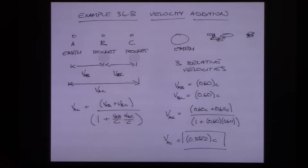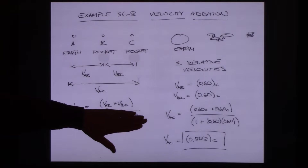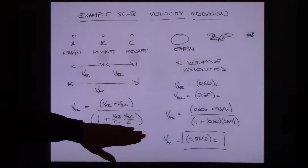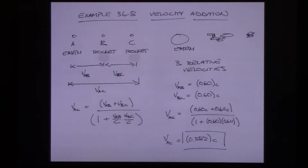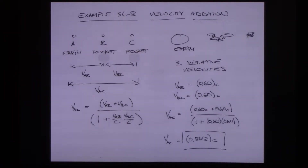Special relativity shows us that there's actually a denominator built into the velocity addition formula. It's not as simple as adding the two velocities together. I do get to add them in the numerator, but then I divide by one plus (v_AB / c)(v_BC / c). We'll see in a couple of lectures the mathematical foundation behind where this formula comes from.